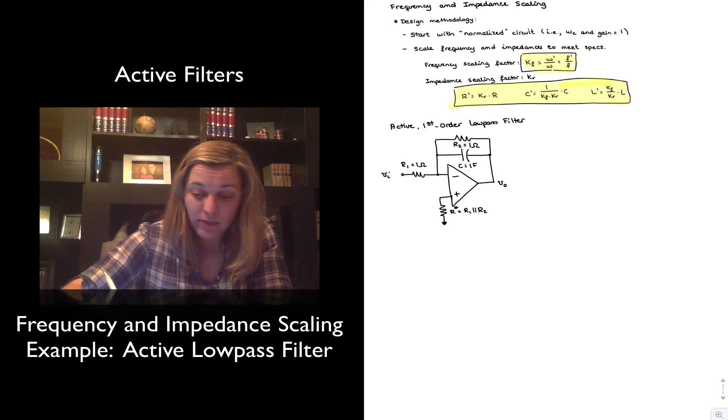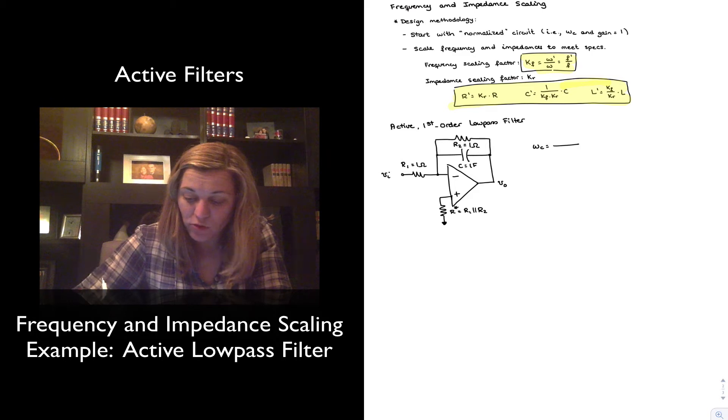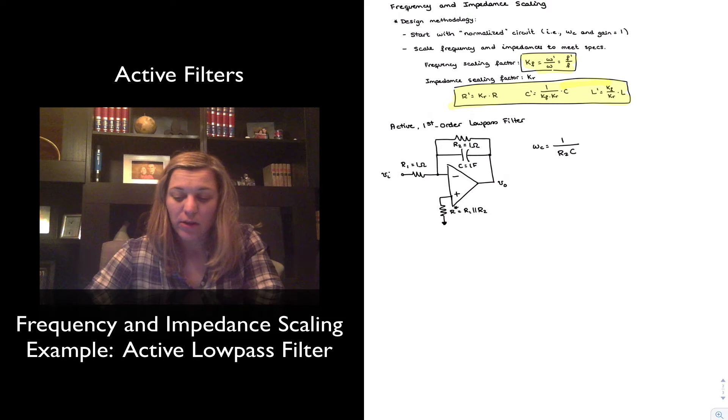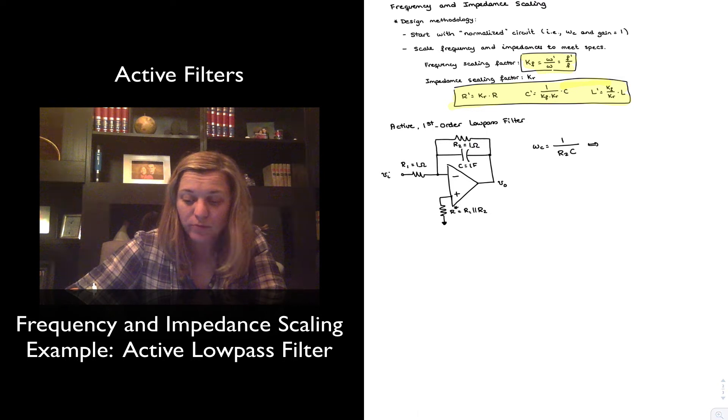So let's go ahead and get started. The cutoff frequency of this circuit, Omega C, is going to be equal to 1 over R2 times C. So basically for the first-order low-pass filter, as we have seen in a prior video, the cutoff frequency is determined by both the feedback resistor and the capacitor. If we wanted to write in terms of Hertz, it will be 1 over 2π R2 times C.